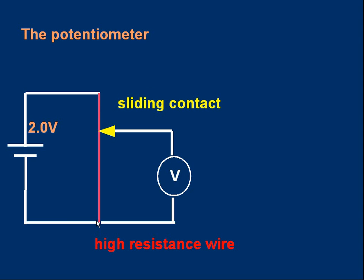And I can choose any voltage between 0 and 2 volts. So it's a good way of having a variable voltage, easily adjusted variable voltage, this sliding contact along the high resistance wire. That's a potentiometer.